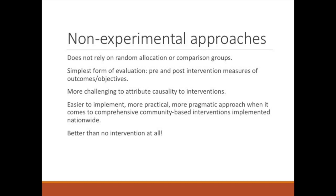Non-experimental approaches don't rely on random allocation or comparison groups — they are the simplest form of evaluation. You take measures pre- and post-intervention related to certain outcomes or objectives. The challenge is that it's more difficult to assign causality to the intervention without random allocation or a comparison group. However, these approaches are much more practical and pragmatic for comprehensive, community-based interventions implemented nationwide or statewide, and they are better than no evaluation at all.